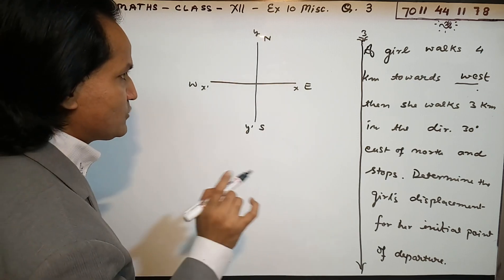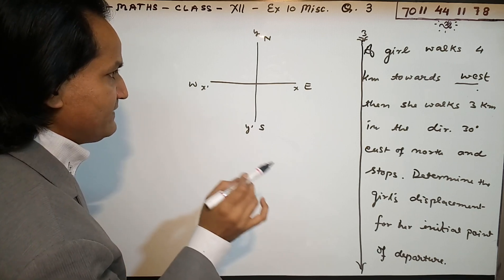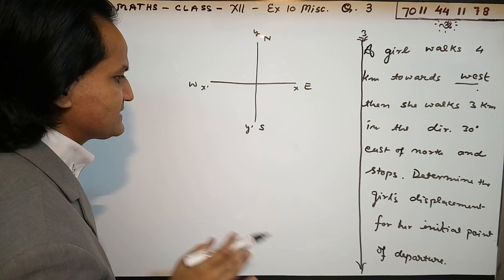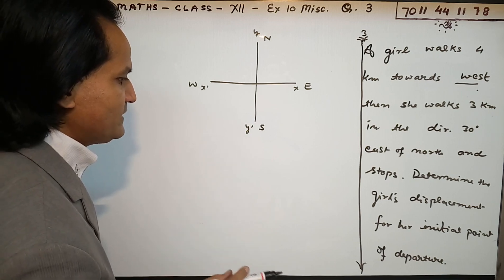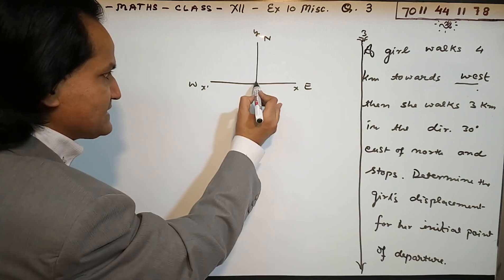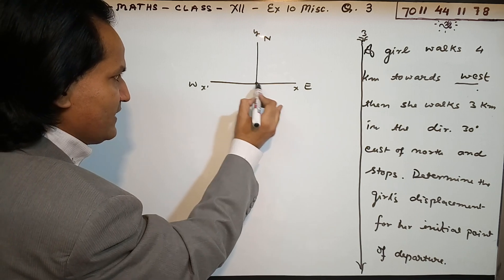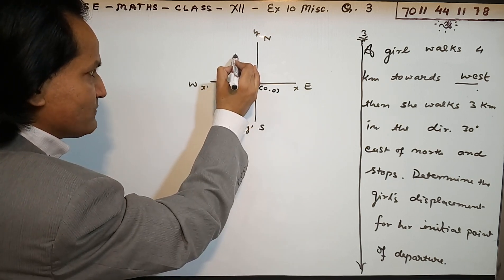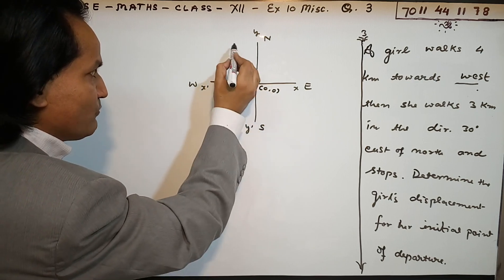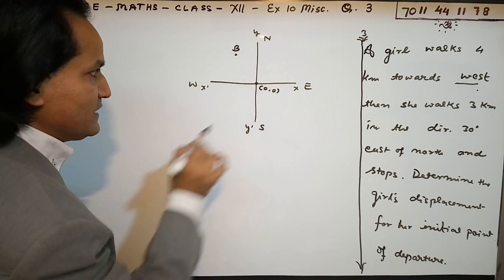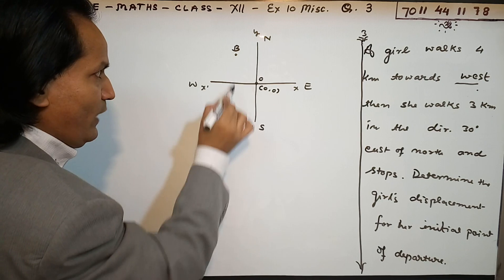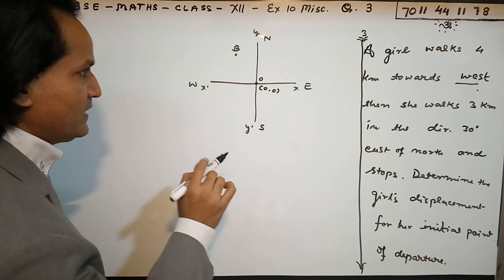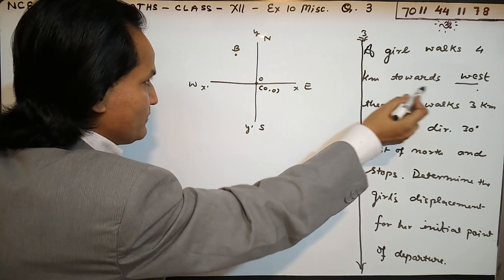She walks 3 kilometers in the direction 30 degrees east of north. We need to determine the girl's displacement from the initial point of departure. The initial point of the girl is at origin (0,0). The final point suppose is here - this one is point B, this one is O. O is the initial point, B is the final point.